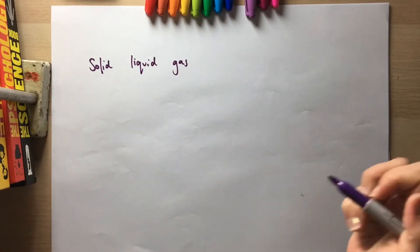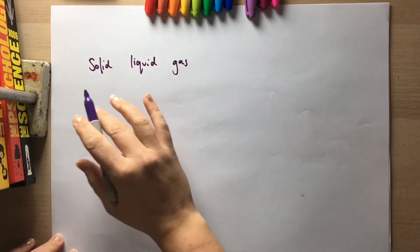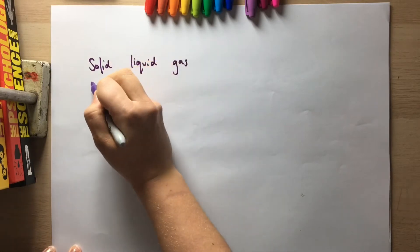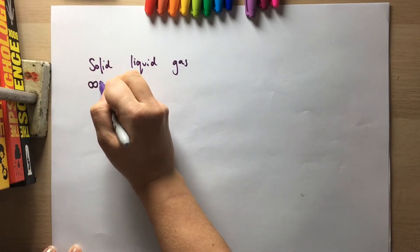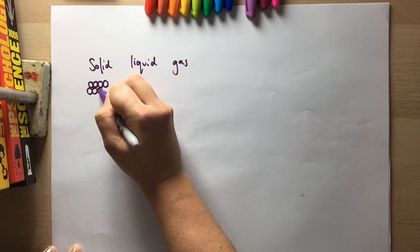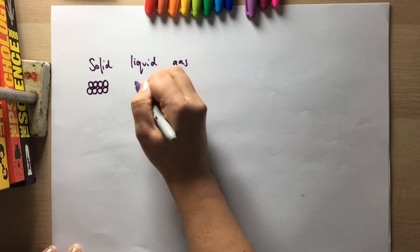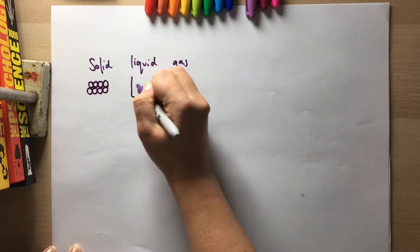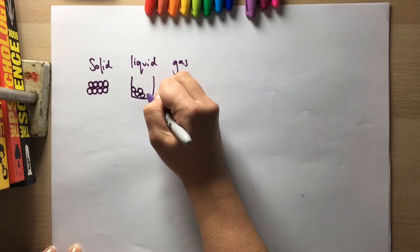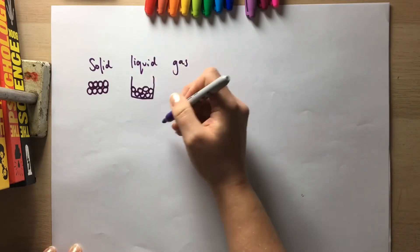You need to draw a particle diagram for each of them. If we imagine this is the same substance, we use circles to represent the particles. If it's a solid, particles are in a regular formation and touching. If it is a liquid, then particles are still touching but not in any regular pattern.